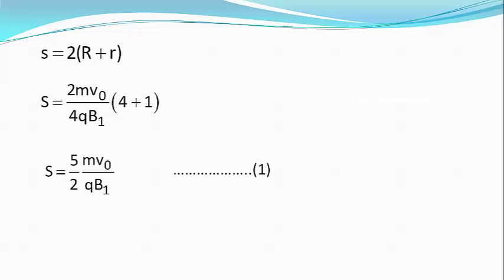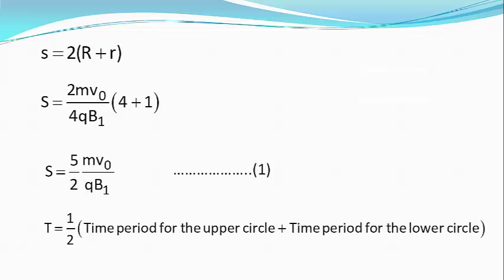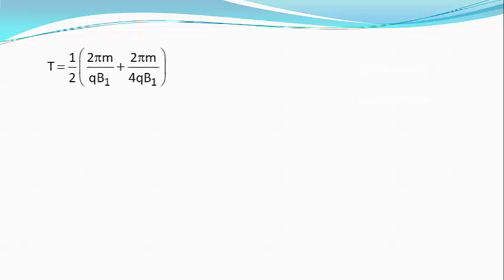The time capital T taken by the particle to complete this distance is equal to half the time period for the upper portion and the time period for the lower portion, or capital T equals half bracket start 2 pi m divided by qB1 plus 2 pi m divided by 4 qB1 bracket close, or capital T equals pi m divided by 4 qB1 bracket starts 4 plus 1, which simplifies to give me capital T equals 5 by 4 pi m divided by qB1, equation 2.